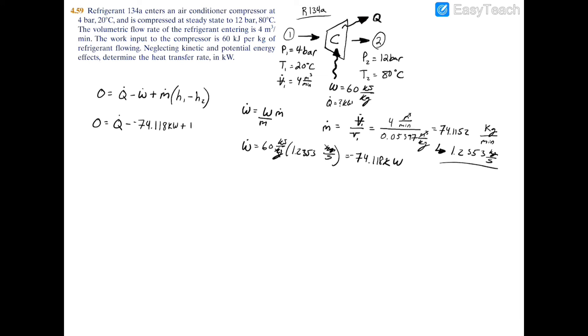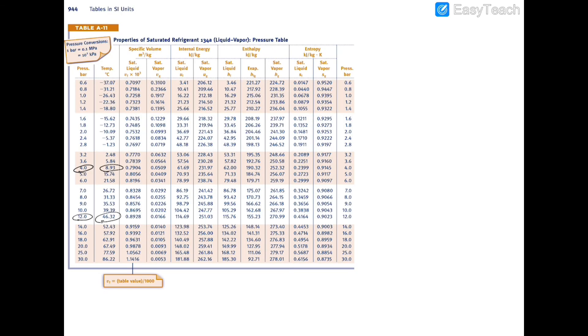Plus our mass flow rate, so we had 1.2353 kilograms per second times the change in enthalpy. So at p1 of 4 bar and 20C, we have to turn to our properties table, and at 4 bar and 20C we have a specific enthalpy of 262.96 kilojoules per kilogram.